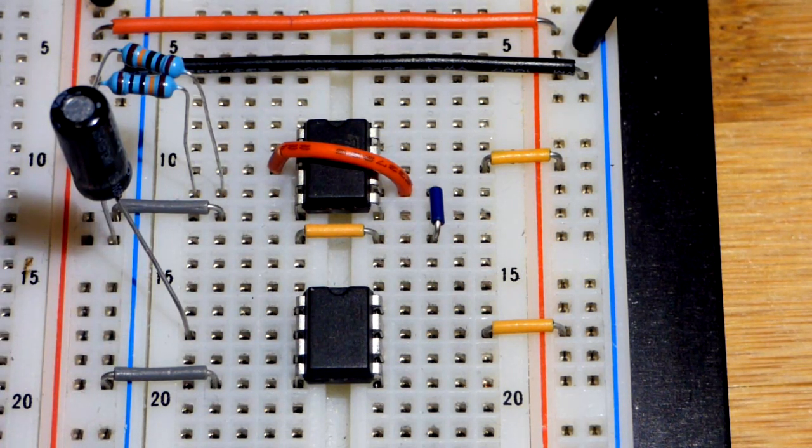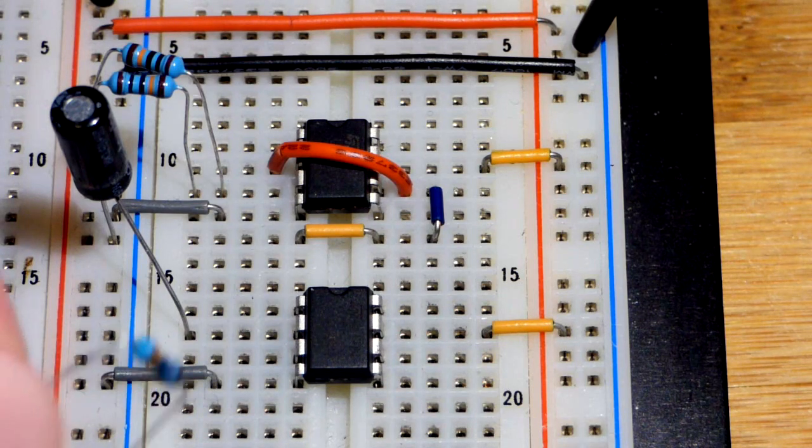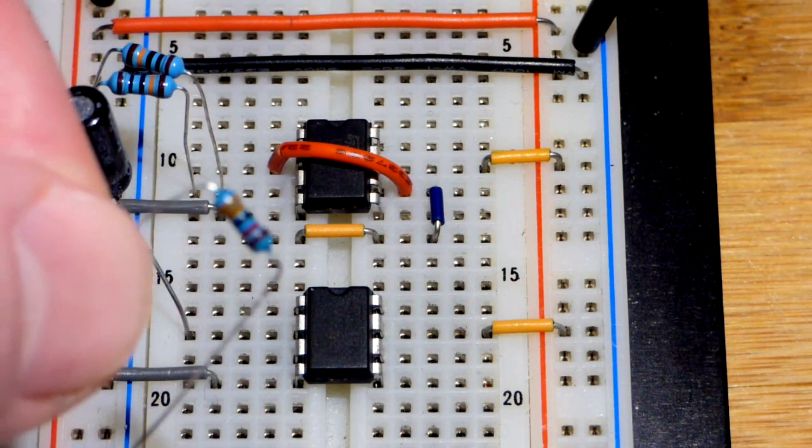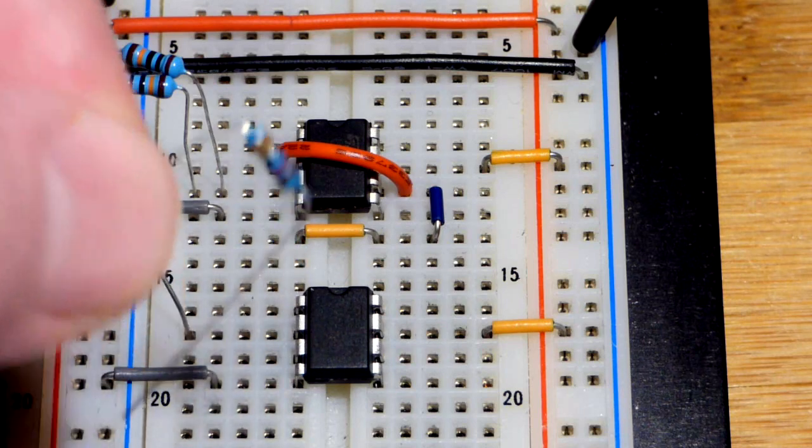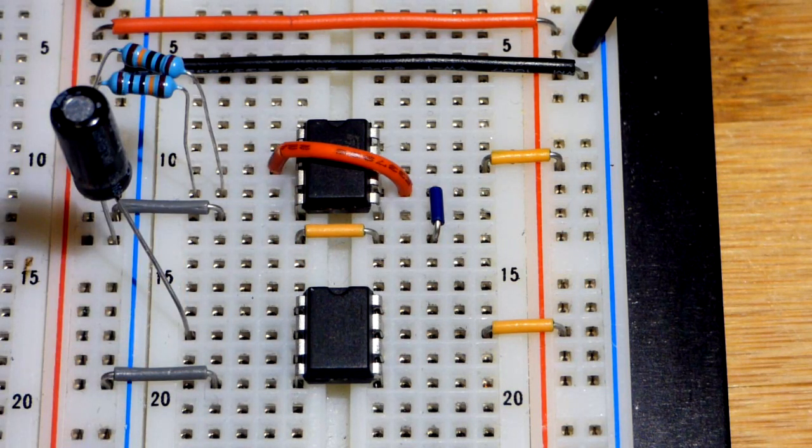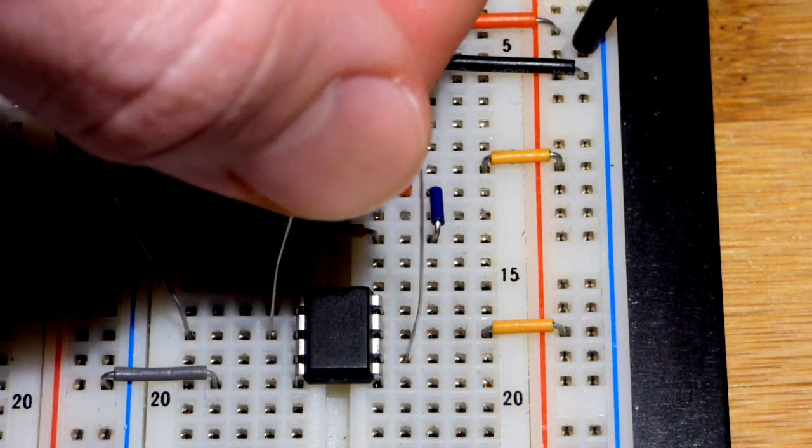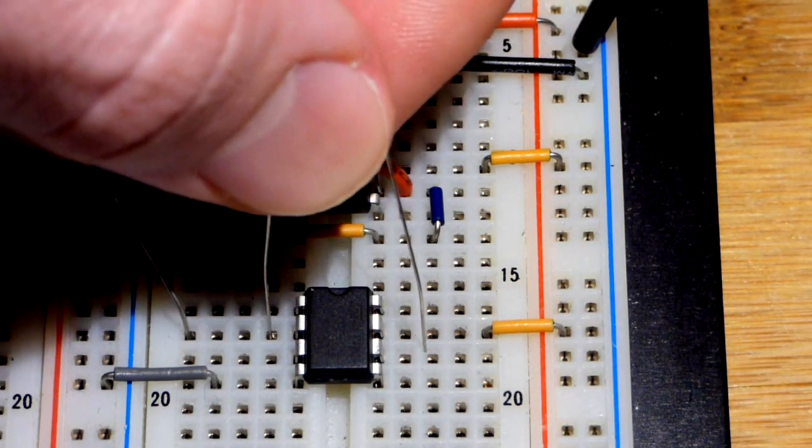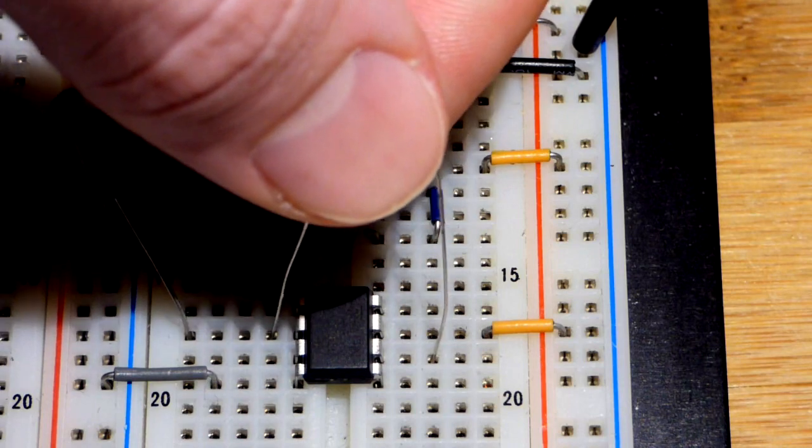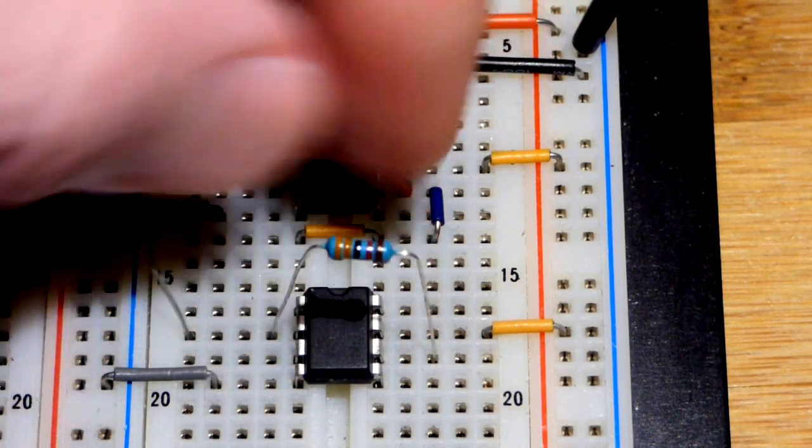For a nice speed for this video with the 10 microfarad capacitance, a 33,000 ohm—33 kilo ohm—resistor works really well, as you can see from the timing that we got. With this capacitor, we're going to put the resistor to the output. I'm going to leave a space at the output for another resistor.